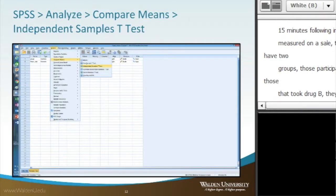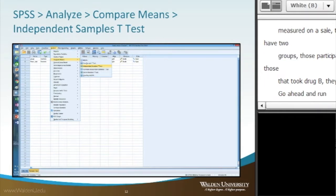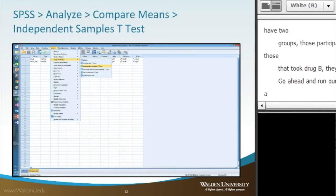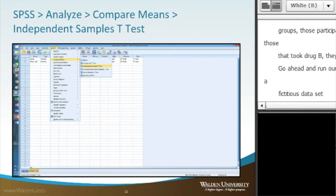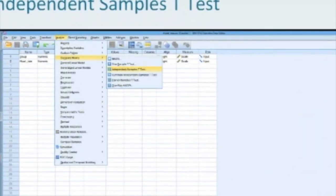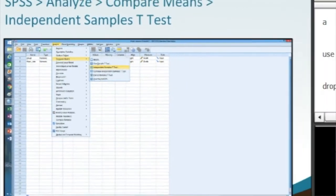Go ahead and run our analysis in SPSS. I'm using a fictitious data set here. So you launch your SPSS. We use the analyze tab at the top, get the drop-down menu, go to compare means. We get the sidebar menu where we select independent samples t-test.